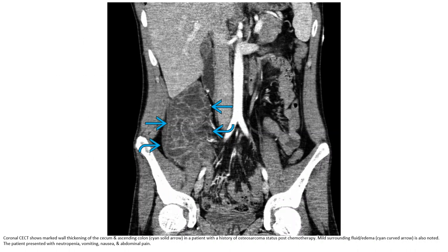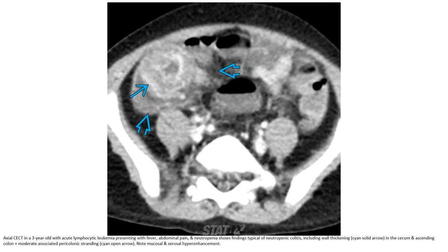Contrast-enhanced CT in a three-year-old with acute lymphocytic leukemia presenting with fever, abdominal pain, and neutropenia, showing findings typical of neutropenic colitis including wall thickening in the cecum and ascending colon, plus moderate associated pericolonic stranding.